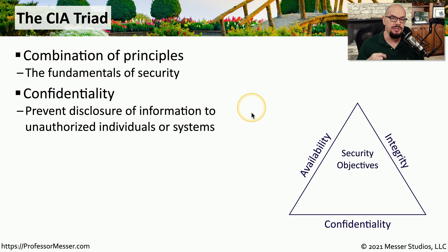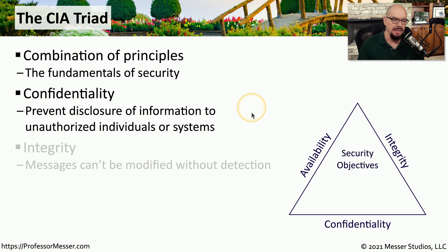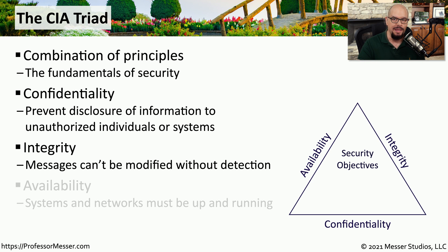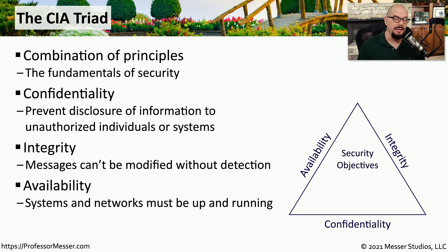Confidentiality ensures that information that we're exchanging is confidential or private between the recipients. This is often combined with integrity, which ensures that the information that we're sending to someone else will not be changed along the way. And availability is a fundamental part of IT because we want to be sure that all of our systems and networks remain up and running.